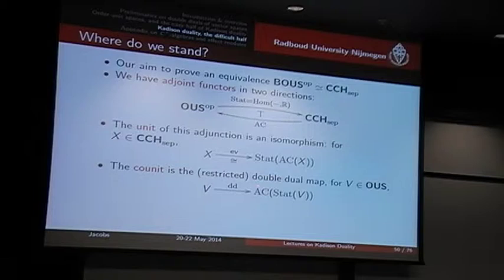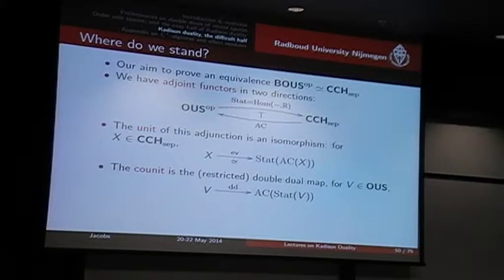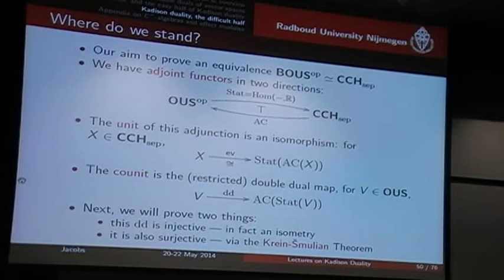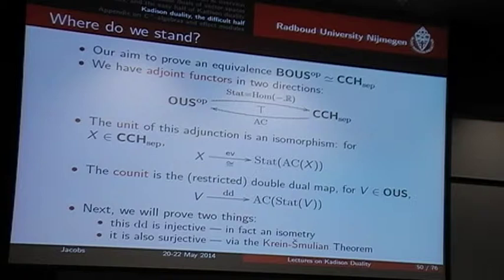So it takes the order unit space to its states, and then the affine continuous functions in the space. This is basically the dual map. Our plan is first to show that this one is injective, and then that it's surjective. There's a bit more to show here — that it's continuous, affine, etc. — that it's a morphism of order unit spaces, but I will skip those details.